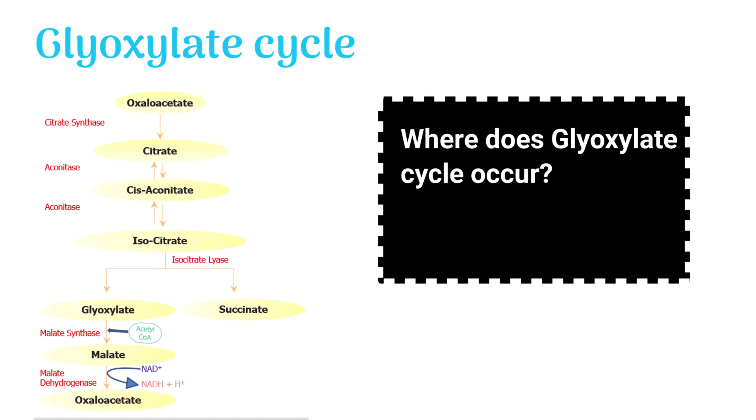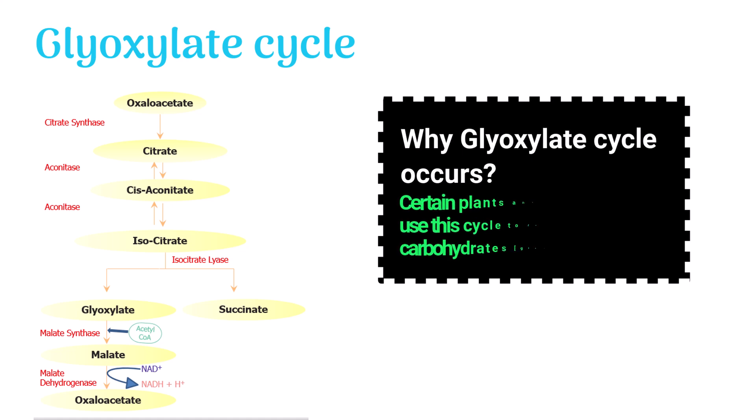The name of that special organelle is glyoxysome. Why glyoxylate cycle occurs? Because certain plants and microorganisms use this cycle to form carbohydrates, specifically glucose from fats. They then use these carbs to generate energy which helps them survive, grow and build new parts.